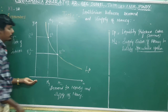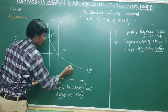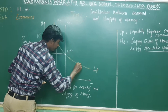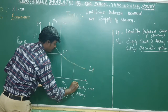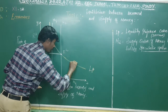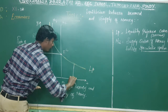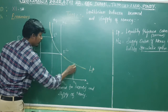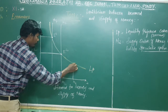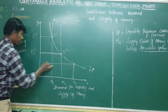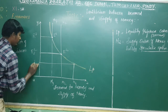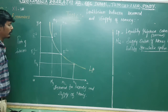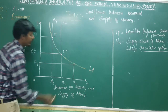Another one is M4, and R4 is less. So M4 is less, and the rate of interest R4 is also less.